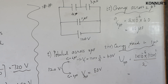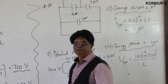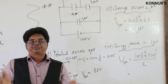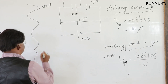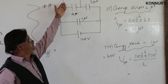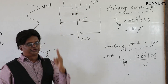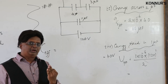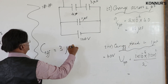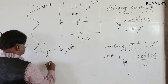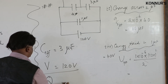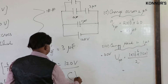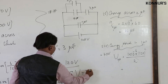The total charge supplied by the battery: C_effective of the network is 3 microfarad and the battery voltage is 120 volts. Therefore Q_total = CV = 3 × 120 = 360 microcoulombs.